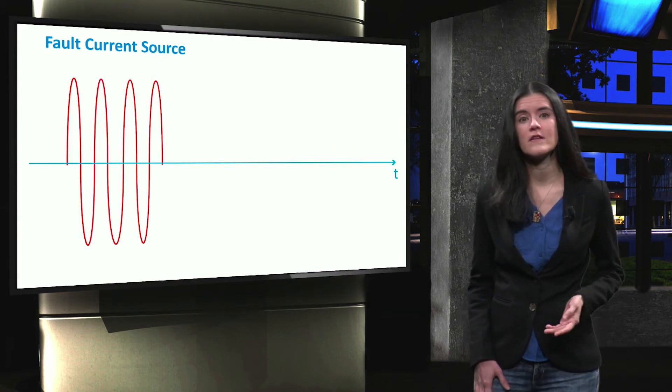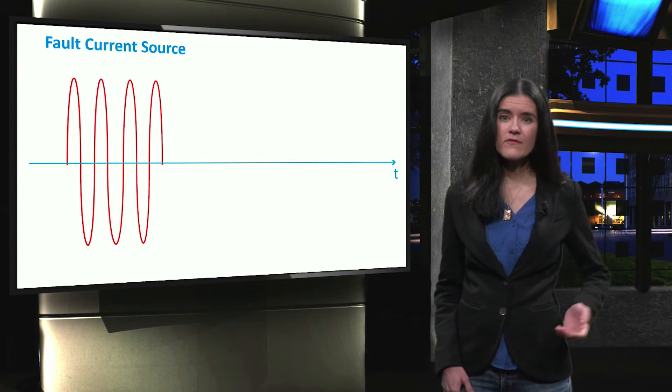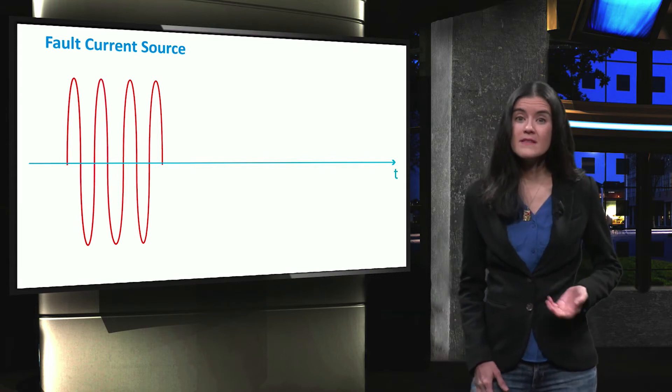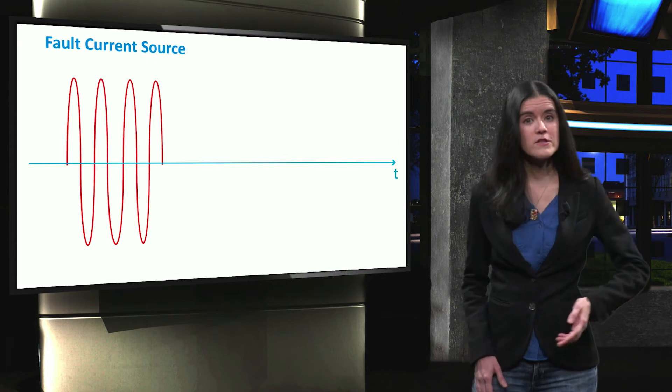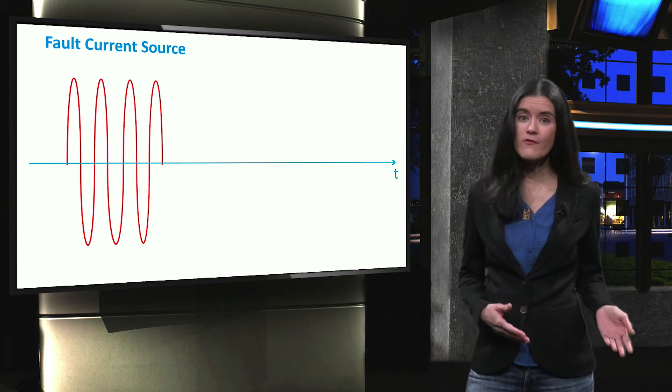As we have previously seen, short-circuit currents are relatively low in microgrids. This can affect the fault current sensitivity. One of the solutions for that problem is to connect a fault current source.